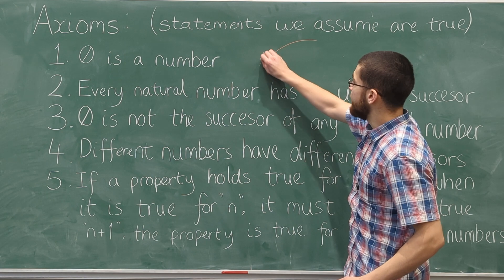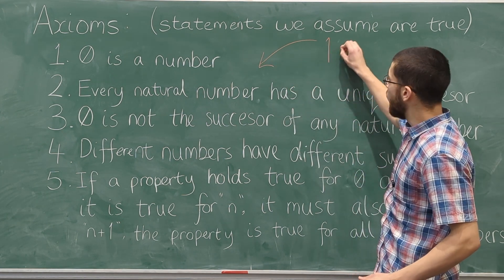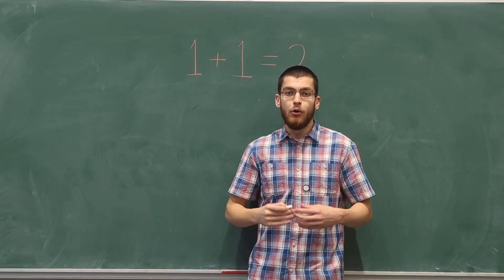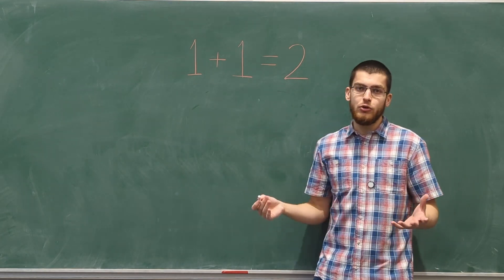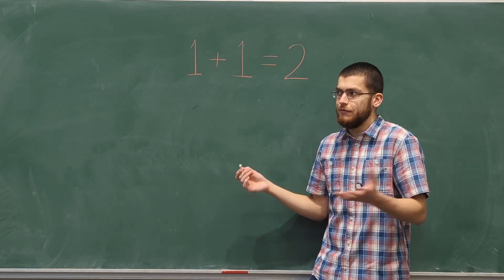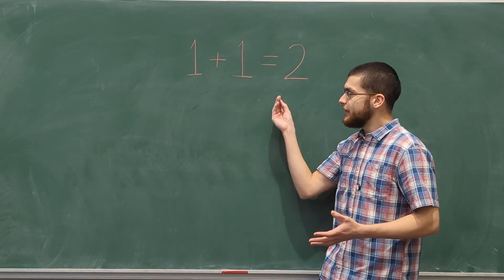These are called Peano's axioms, and from this we can prove that one plus one equals two. But right now, this doesn't actually mean anything. I've just written a bunch of symbols on the board without actually defining any of them. So what do each of these things mean?